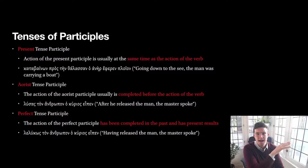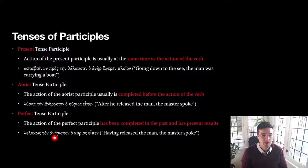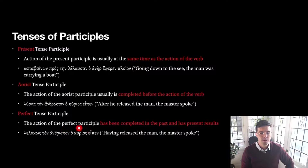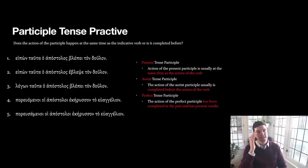With the perfect tense, the action of the participle has been completed in the past but the action of the participle still has results when the verb happens. So 'lelukas ton anthrōpon' — 'having released the man' — in the past the man was released and he was still released when the Lord spoke in past time. So 'having released the man, the master or Lord spoke.'